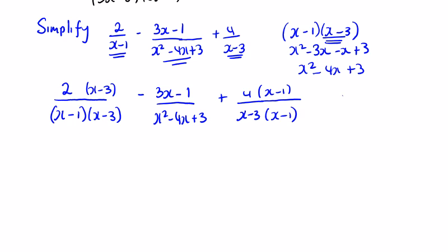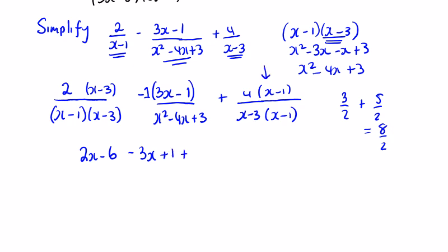When we have the same denominators — like 3 over 2 plus 5 over 2, we just add the numerators to get 8 over 2 — we don't do anything with the denominator. So in this case we remove the brackets: 2 by (x minus 3) is 2x minus 6. Be careful — that minus is in front of that bracket, so it's like having a minus 1 in front. So we have minus 1 by 3x, and minus 1 by 1 is plus 1. Then we have plus 4x minus 4, all over x squared minus 4x plus 3.